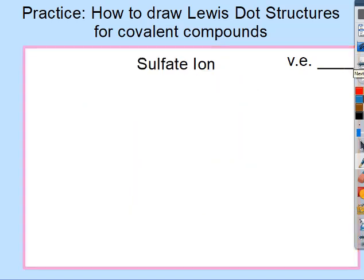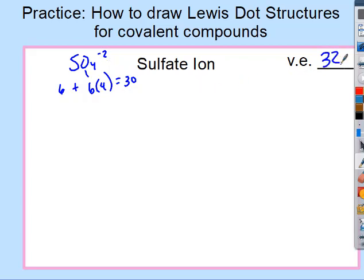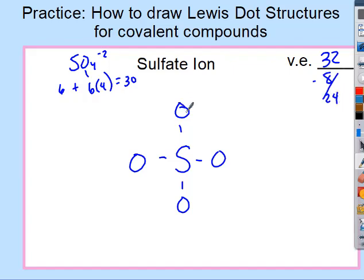Sulfate is SO4²⁻. Six valence electrons per oxygen times four is twenty-four, plus six for sulfur is thirty, plus two for the negative two charge gives thirty-two electrons total. Sulfur goes in the middle. Subtract eight for the four bonds. Each oxygen needs six more but sulfur already has eight. Six times four is twenty-four — we have just enough to add as lone pairs. Don't forget your brackets and charge for the ion.